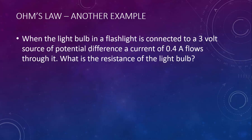Here's another example. When the lightbulb in a flashlight is connected to a 3 volt source of potential difference, a current of 0.4 amps flows through it. What is the resistance of the lightbulb?